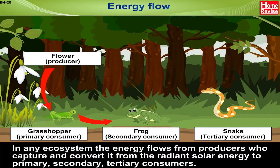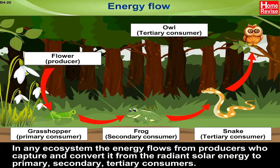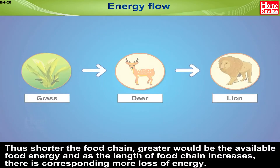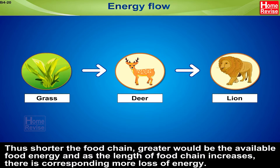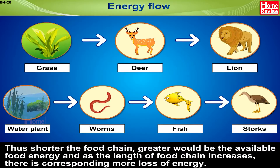In any ecosystem, the energy flows from producers who capture and convert it from the radiant solar energy to primary, secondary, and tertiary consumers. Thus, shorter the food chain, greater would be the available food energy, and as the length of food chain increases, there is a corresponding greater loss of energy.